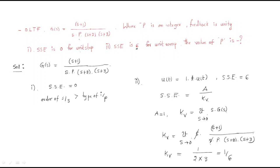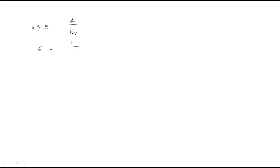So Kv equals 1/(6P). The steady-state error formula gives: SSE = a/Kv = 1/(1/6P) = 6P. We are told SSE equals 6, so 6P = 6, and therefore P equals 1.